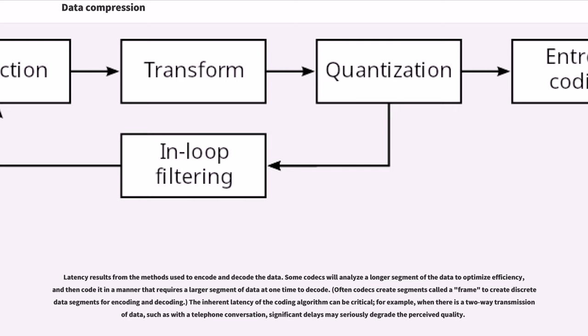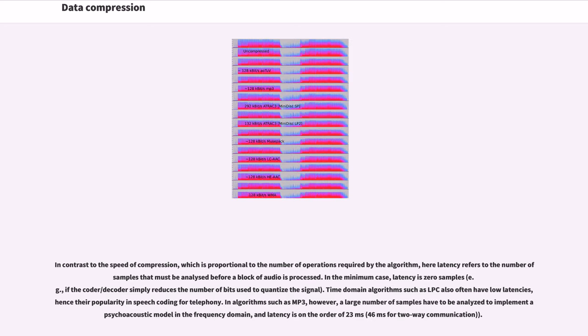The inherent latency of the coding algorithm can be critical. For example, when there is a two-way transmission of data, such as with a telephone conversation, significant delays may seriously degrade the perceived quality. In contrast to the speed of compression, which is proportional to the number of operations required by the algorithm, here latency refers to the number of samples that must be analyzed before a block of audio is processed. In the minimum case, latency is zero samples, for example, if the coder/decoder simply reduces the number of bits used to quantize the signal.